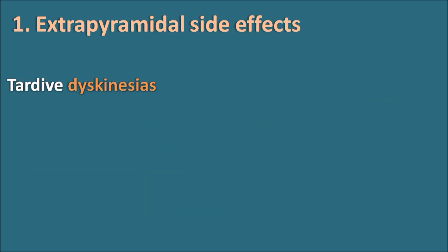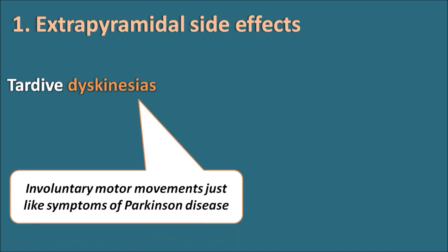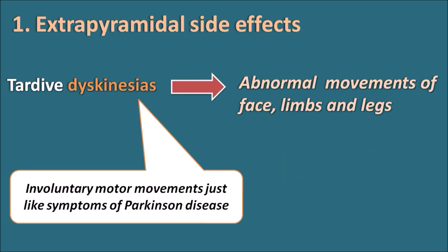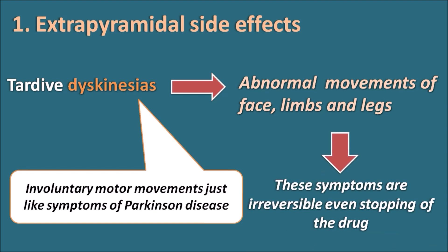The second type of extrapyramidal side effect is tardive dyskinesia. 'Tardive' means slowly developing, so these are observed after long-term treatment with phenothiazines. Dyskinesias are involuntary motor movements resembling symptoms of Parkinson's disease, including abnormal movements of the face, limbs, and legs. These symptoms are irreversible in nature and cannot be stopped even by stopping the drug, so they should be closely monitored.